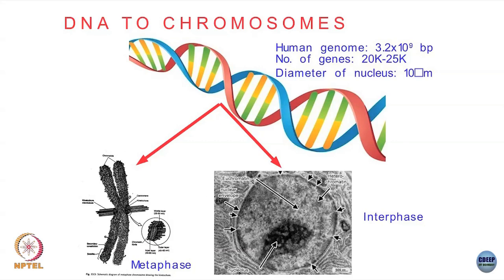Eventually you get a structure which in metaphase you might be familiar with — the famous X structure of chromosomes. But in general, if you look at the interphase — when the cell is not dividing — the chromosome looks not like this nice X structure, but like a mess. This whole thing is the chromosome.